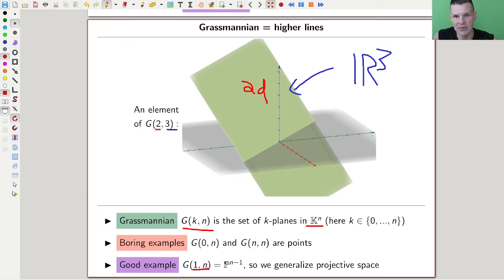Essentially, the k equals one example is projective space, which should convince you that Grassmannians will play an important role, or at least are natural objects to consider. Whether they play an important role depends on how much you can actually say about them. You can come up with many natural generalizations, but the question is: can you say something about them? For Grassmannians you can.